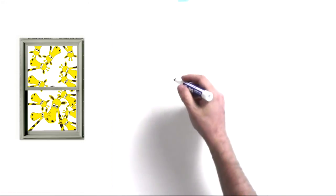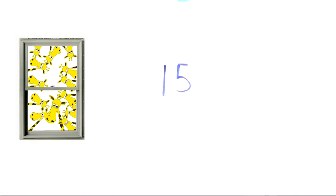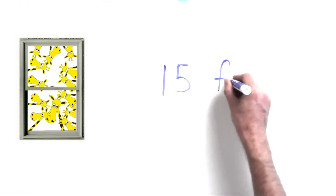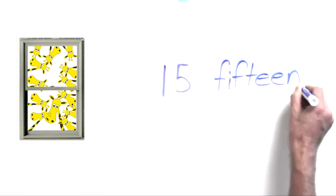15 giraffes peeking in my window. My goodness. I don't know if I would like that. That might scare me if I woke up and I saw 15 giraffes peeking in my window. But if they did, I would be able to write the number 15 because it looks like this, just a 1 and a 5. 15. And here's how you write the word 15. Fifteen. F-I-F-T-E-E-N. Easy. Easy peasy as my kids like to say.